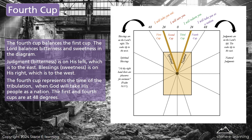The fourth cup balances the first cup. The Lord balances bitterness and sweetness in the diagram. Judgment and bitterness are on his left, which is to the east. Blessing and sweetness are on his right, which is to the west. The fourth cup represents the time of the tribulation, when God will take his people as a nation. The first and fourth cups are both at 48 degrees.